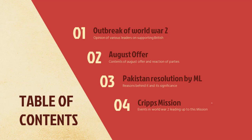The second major thing that we will cover is the August offer — what were the contents, the reasons behind its sending, and what was the opinion of various leaders on it, whether they accepted or rejected it. The third major thing is the Pakistan resolution by Muslim League — the reasons behind passing it and its outcomes and significance.